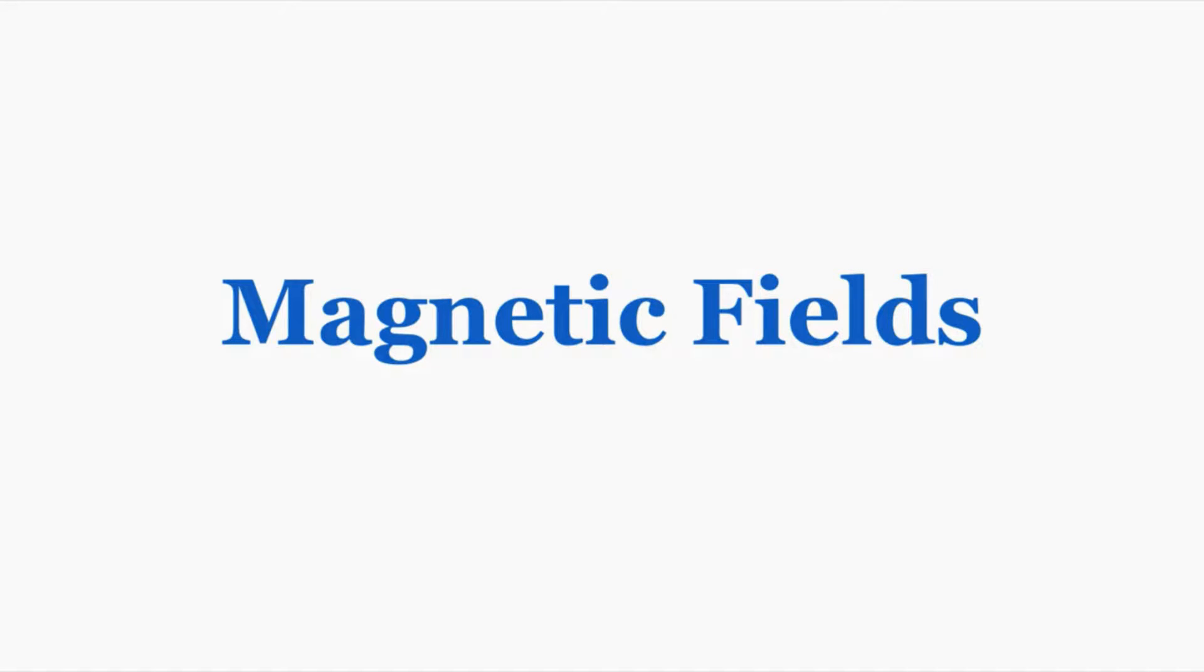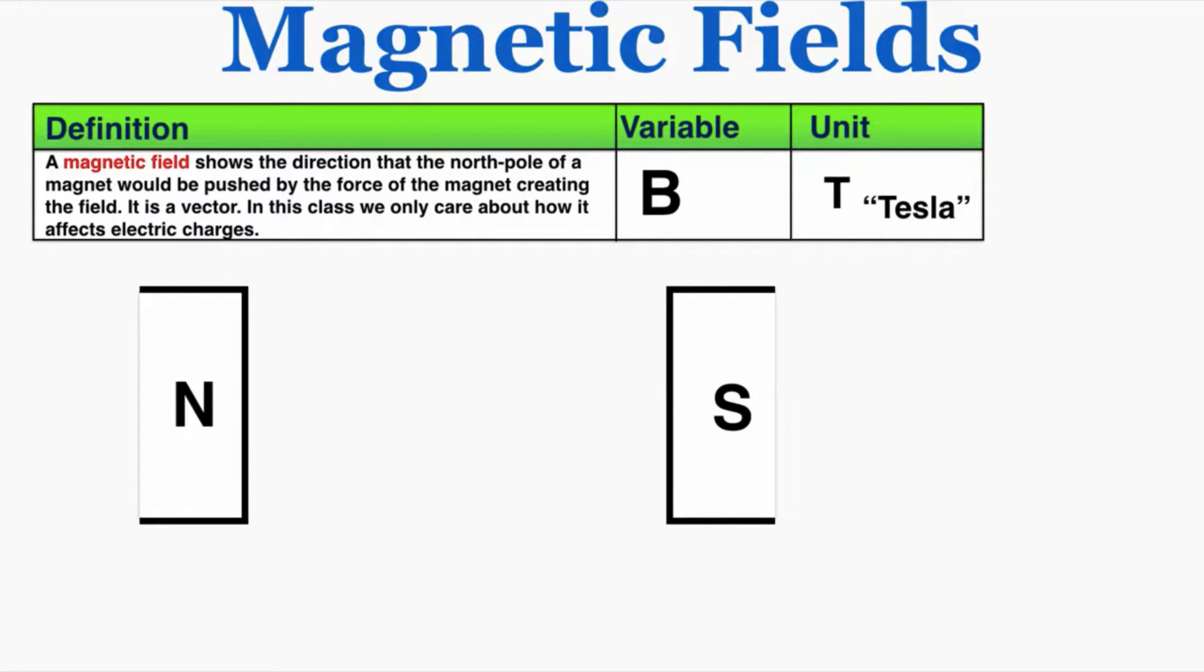This is a quick video on how magnetic fields work. A magnetic field shows the direction that the north pole of a magnet would be pushed by the force of the magnet creating the field. It's a vector. In this class we only care about how it affects electric charges.